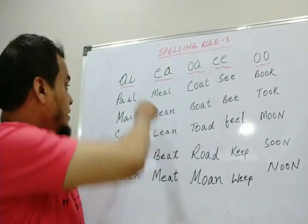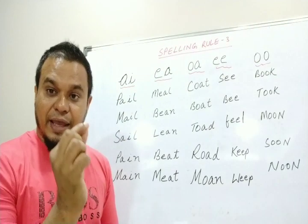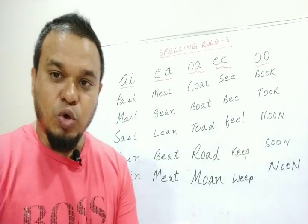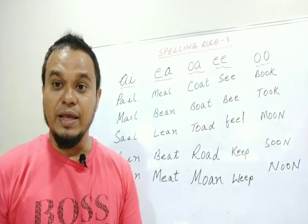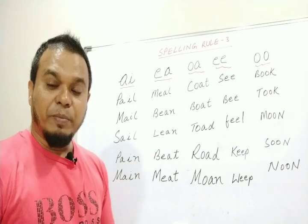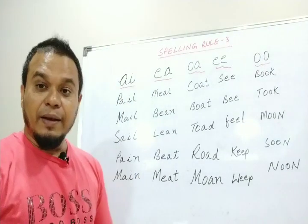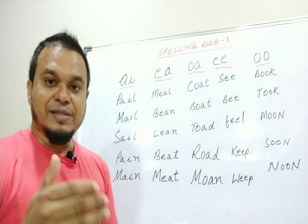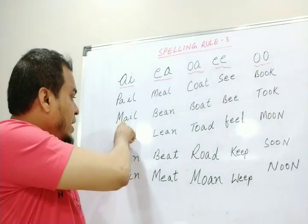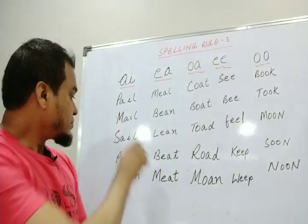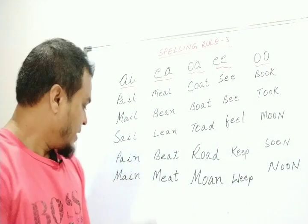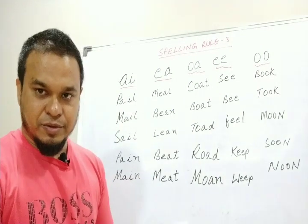Let's get started. When A and I are together, the sound will be A — the long A sound. For example: P, A, I, L — PAIL. A and I together give you the long A sound.